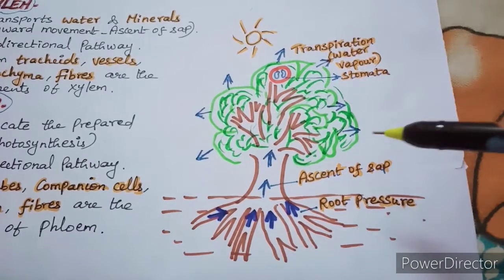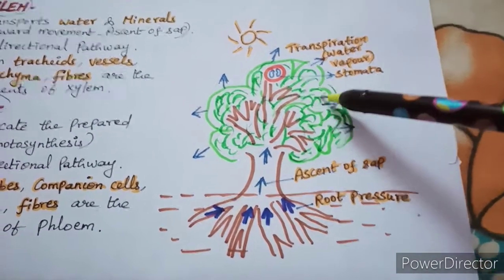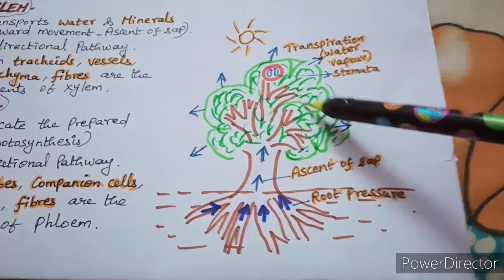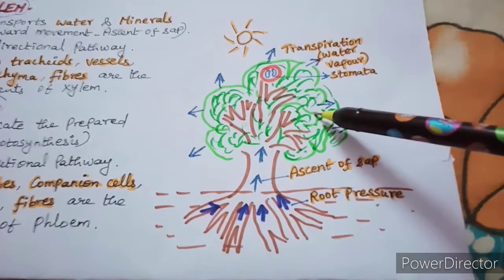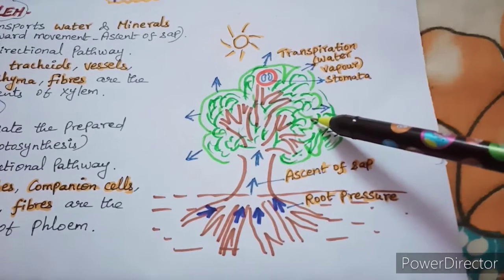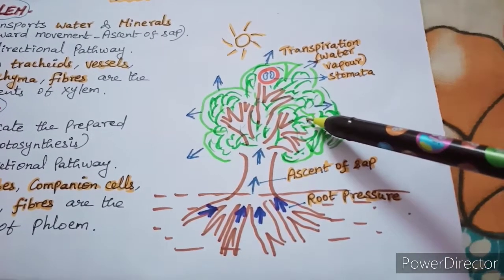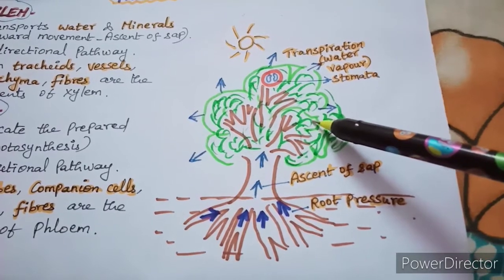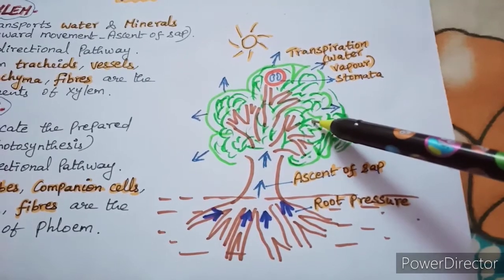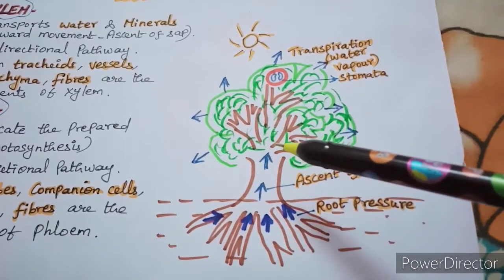Now we understood the function of xylem. Coming to the function of phloem — the food is prepared by the process called photosynthesis and should be translocated from one place to another, which is also called translocation, carried out by the phloem. Hence xylem and phloem are known as vascular tissue or conducting tissue — conducting tissue meaning which can transport water, minerals, as well as food.